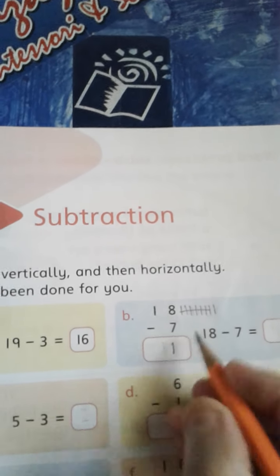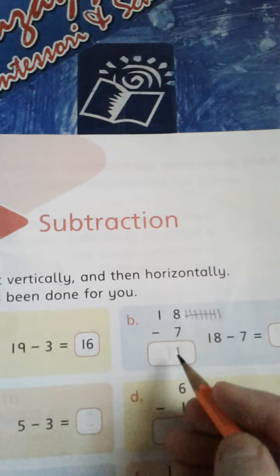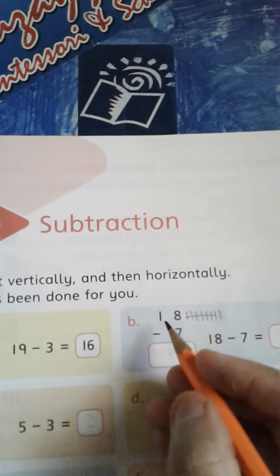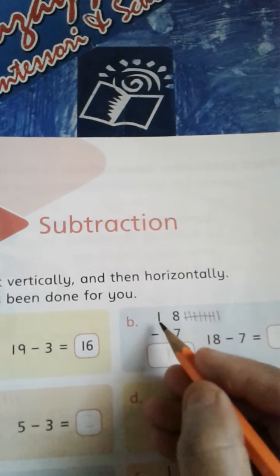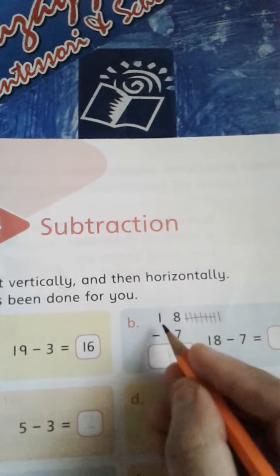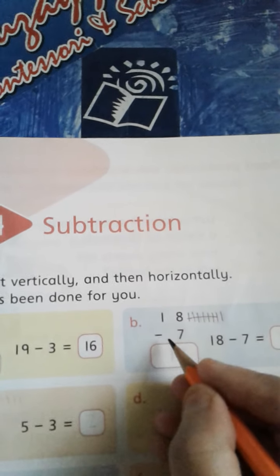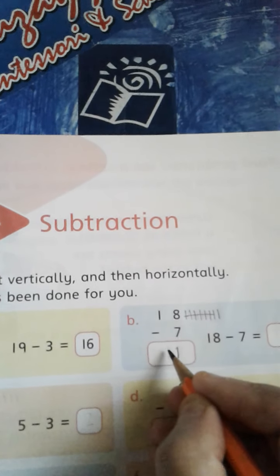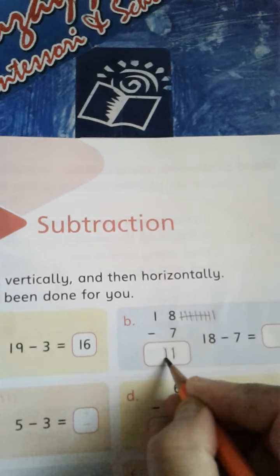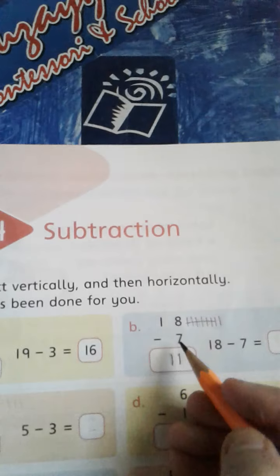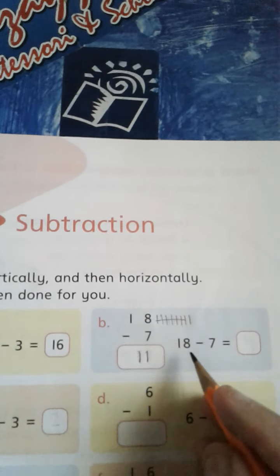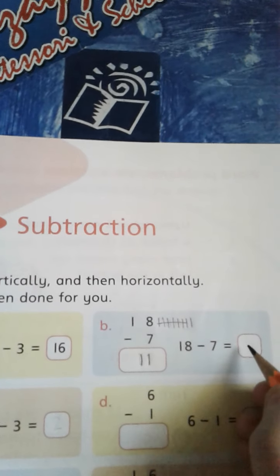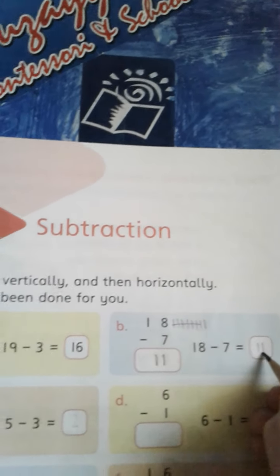So we have 1. Look at the tens column. If you have just 1 in the tens column and we have to subtract 1 in the tens column, it means 18 minus 7 is equal to 11, same as 18 minus 7 is equal to 11.